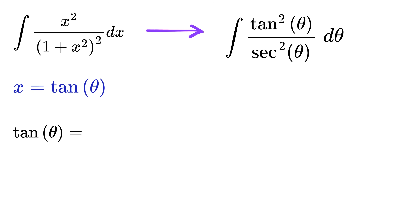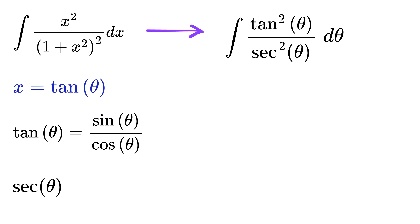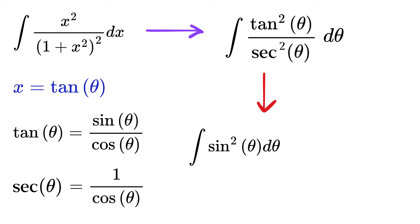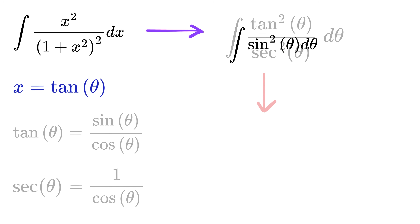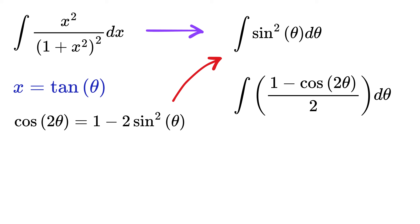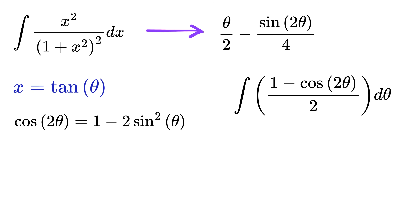Now tan theta is sin theta over cos theta, and sec theta is 1 over cos theta. Therefore, this will finally be equal to the integral of sine squared theta d theta. Next, we can use the cos 2 theta identity with respect to sine squared, and substitute it here to finally get the answer.